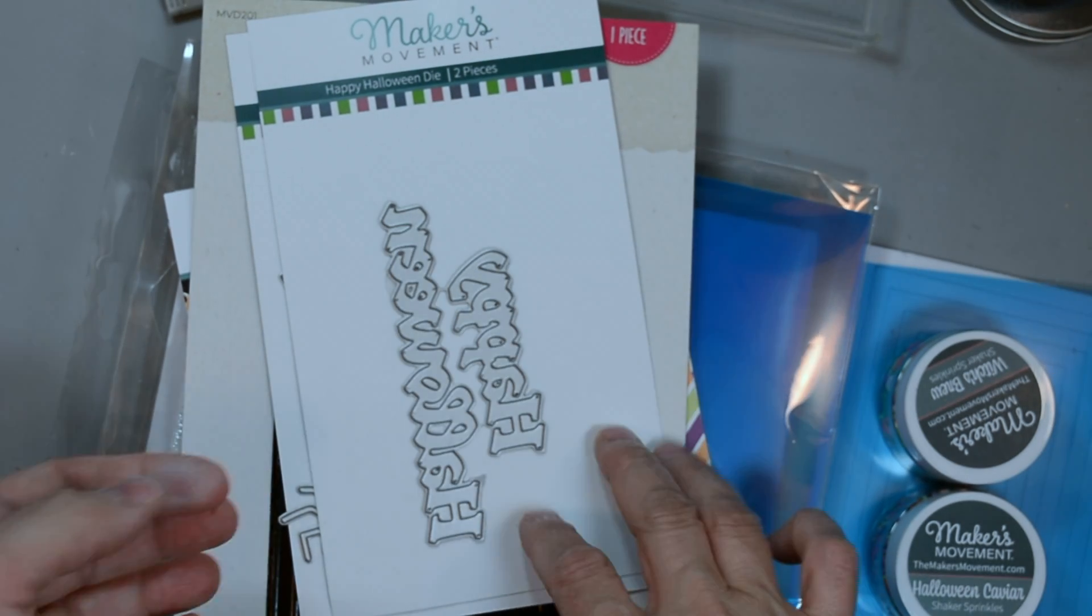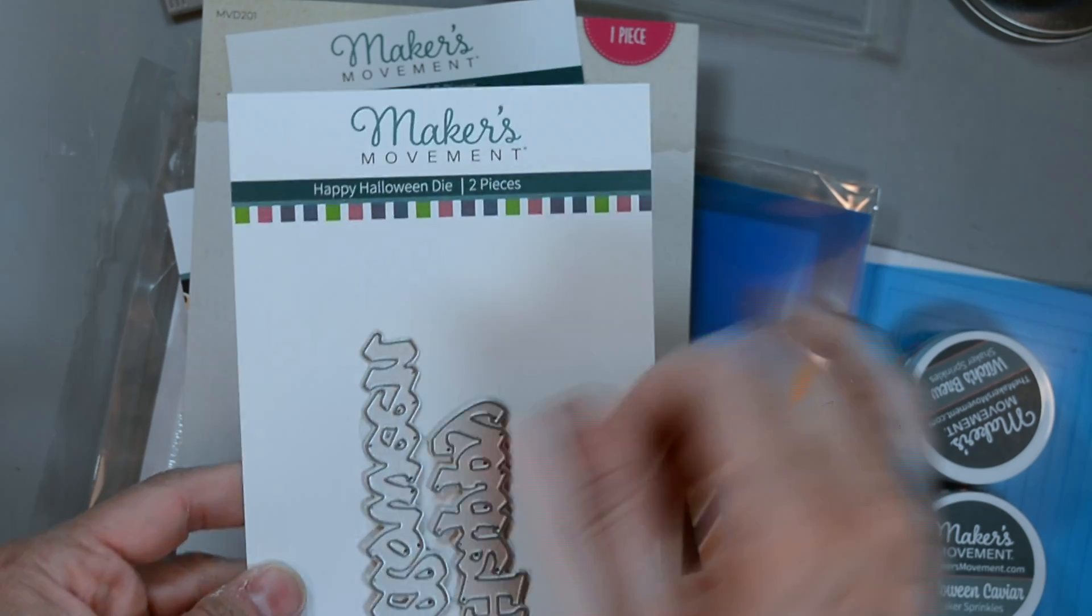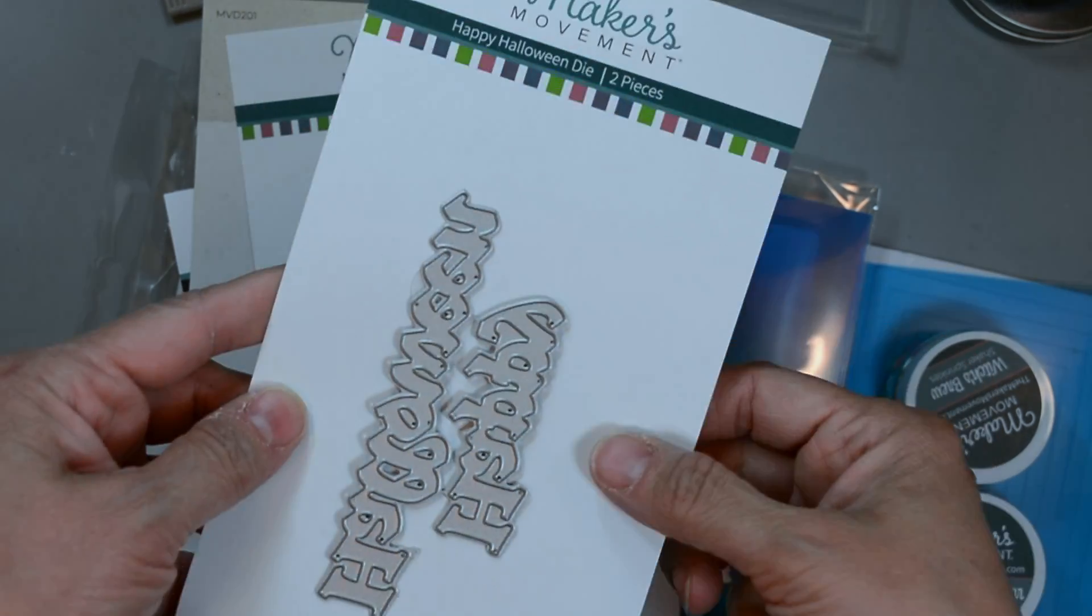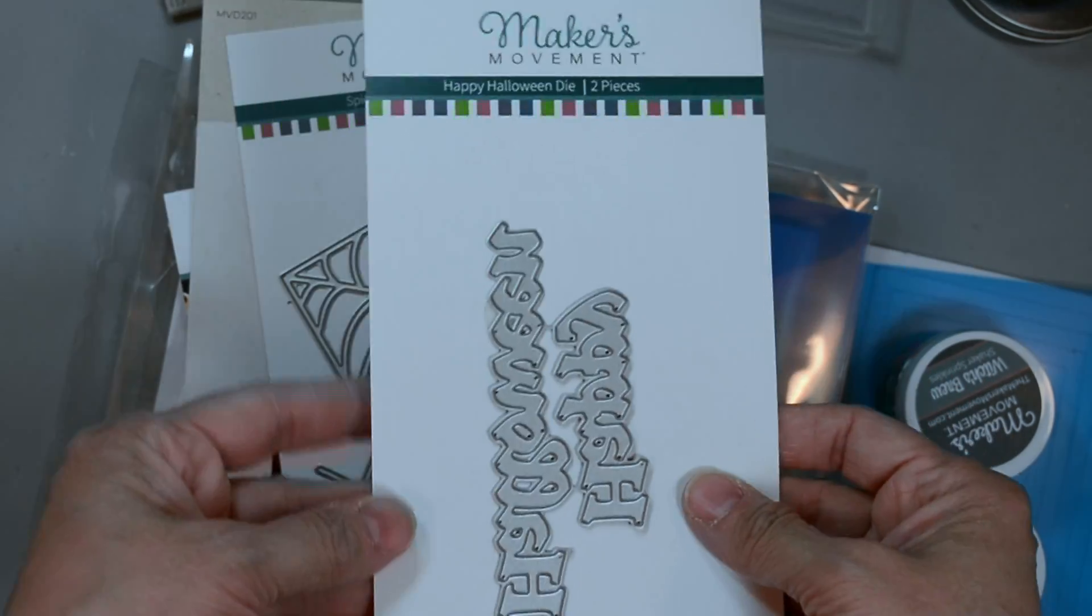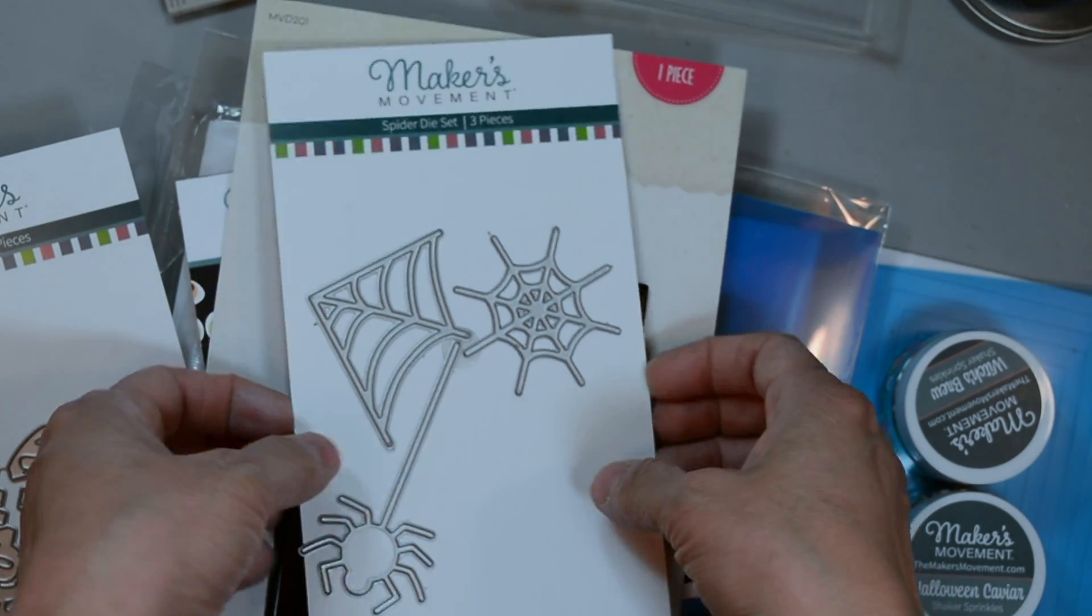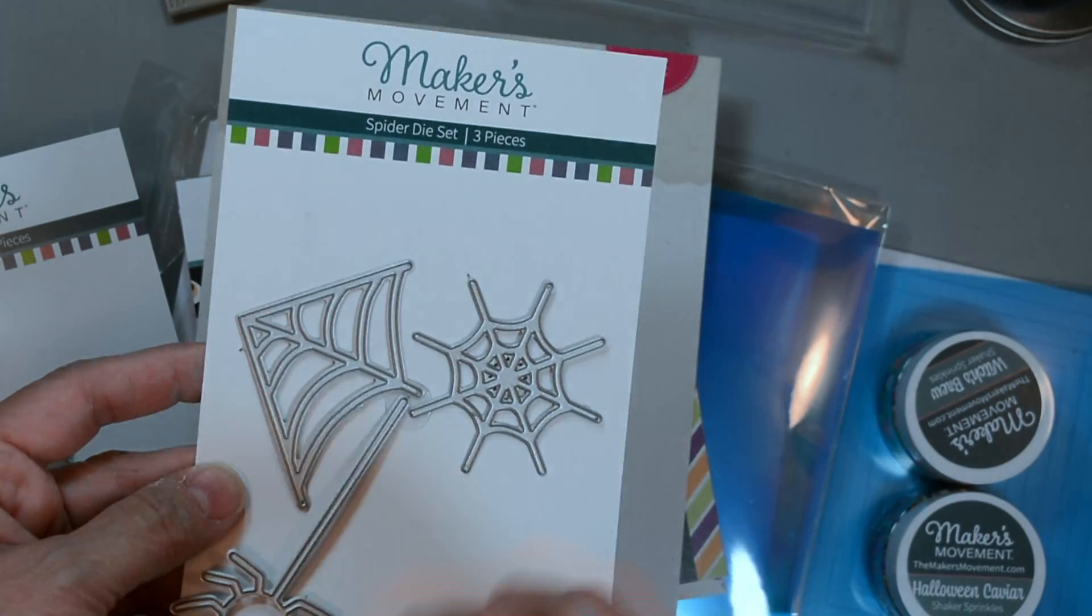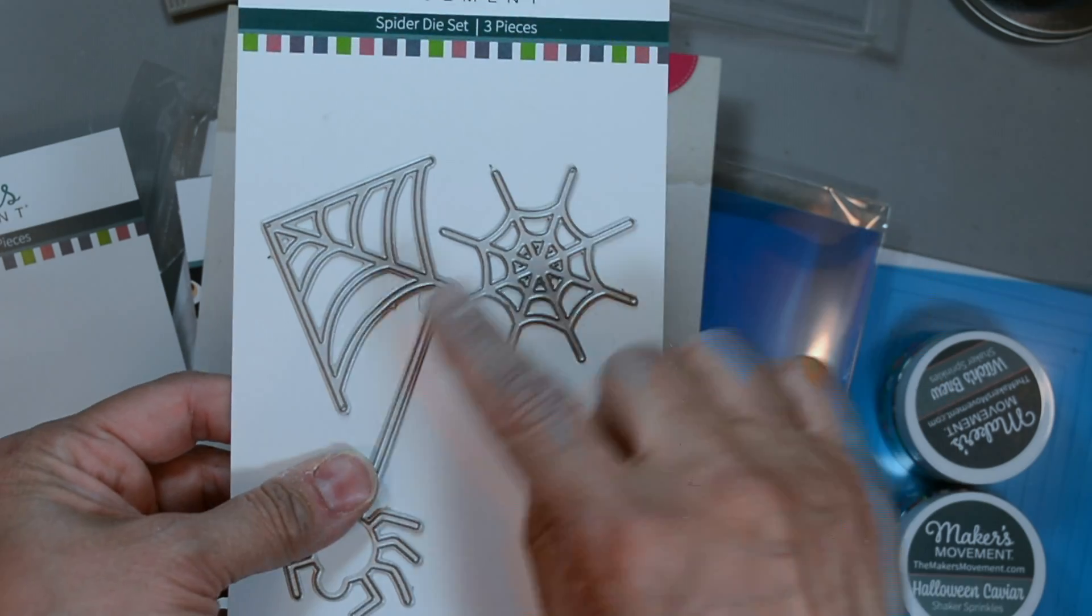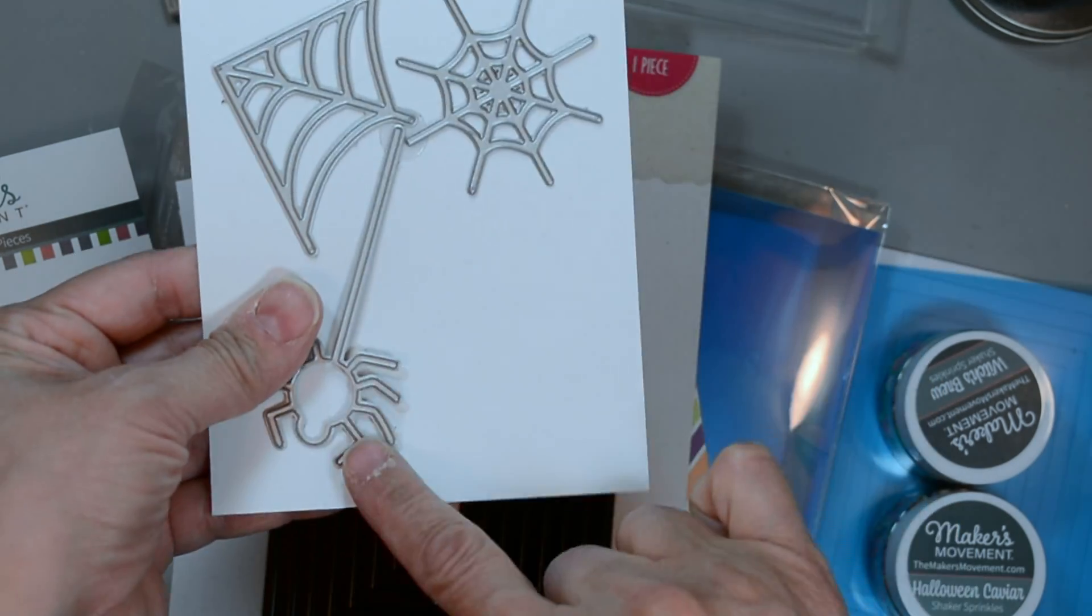The new Happy Halloween die set, and this is actually in two pieces but I'm going to leave it as this. The spider set which contains two spider webs and one spider, and this is also new for this fall release.